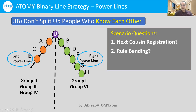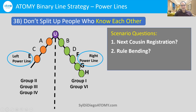Some of you still ask, isn't it okay to break the rule sometimes? Again, it's not beneficial for you, for Cousin Mary, for Uncle Al, or for Aunt Edna — because they're all losing out on the synergy of the binary line system, especially given the generous, unlimited levels of Atomy.